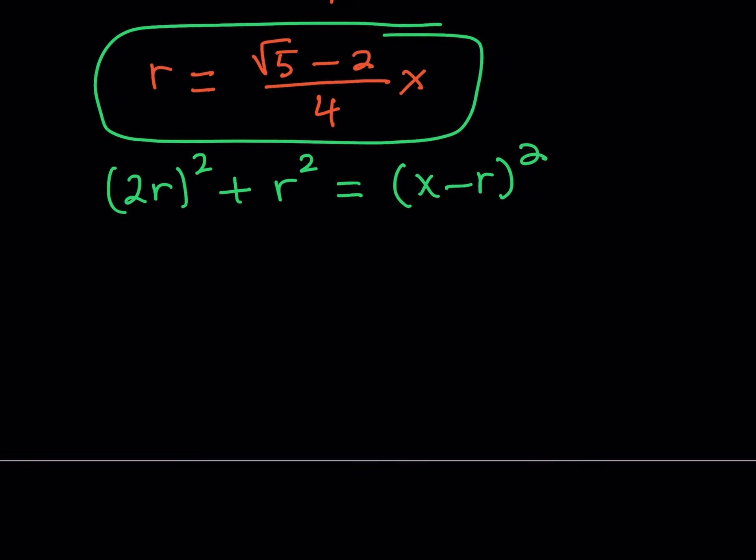We got the answer and it looks fine. But let me give you a second perspective. Let's add these up. This is 4r squared. This is r squared. So that's 5r squared. That equals x minus r quantity squared. Notice that we turn this into a quadratic, but you don't need to. Because this is already a completed square, I can just go ahead and square root both sides.